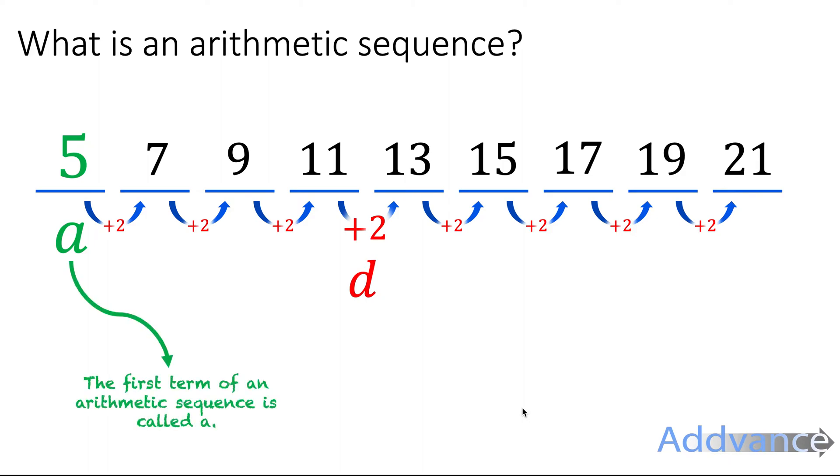Here we call the first number A. We give the first number the letter A. And the amount that's going up by each time we call a difference, which is given by the letter D. So here the first number A is equal to 5. The difference D is equal to 2.